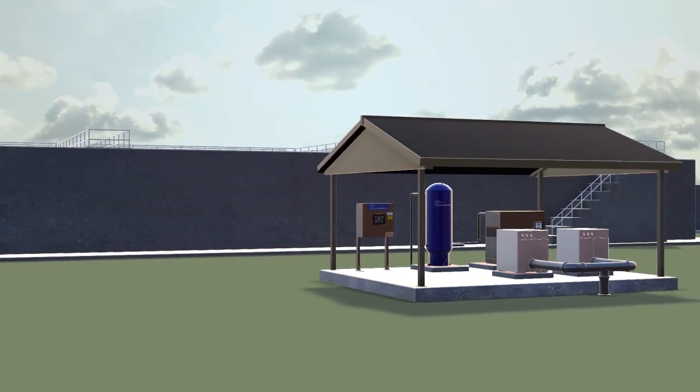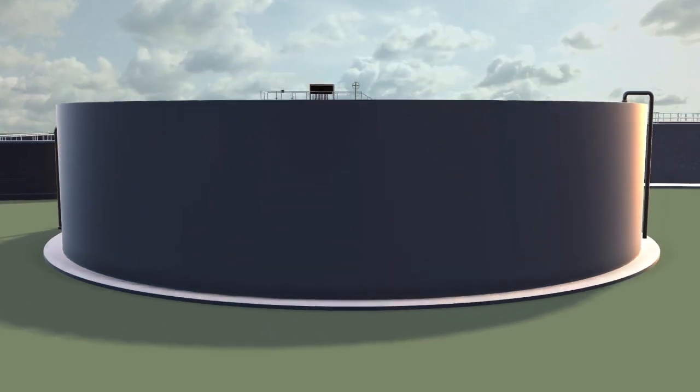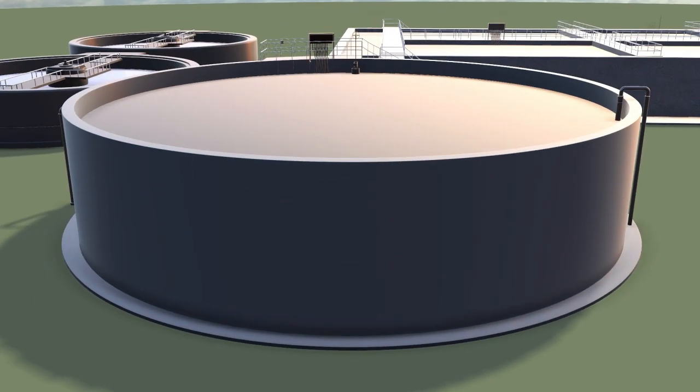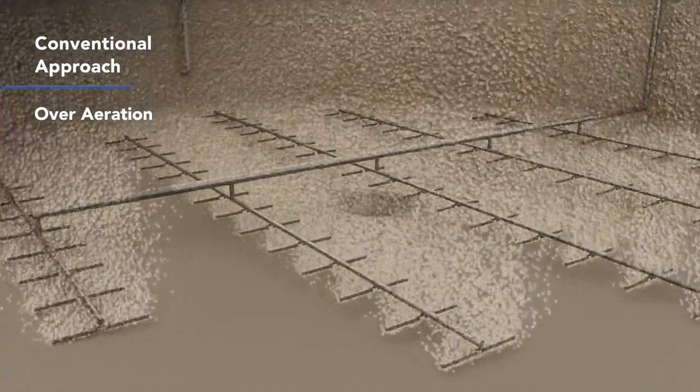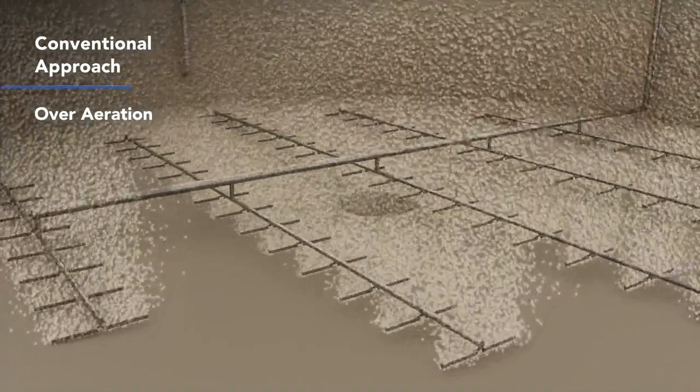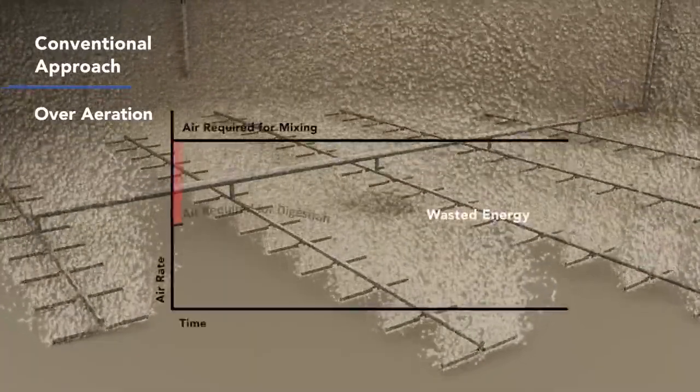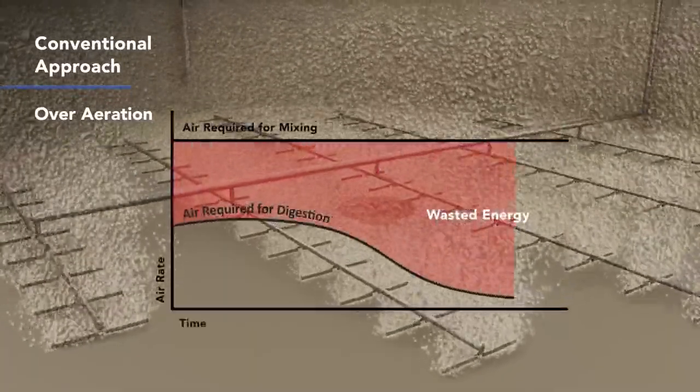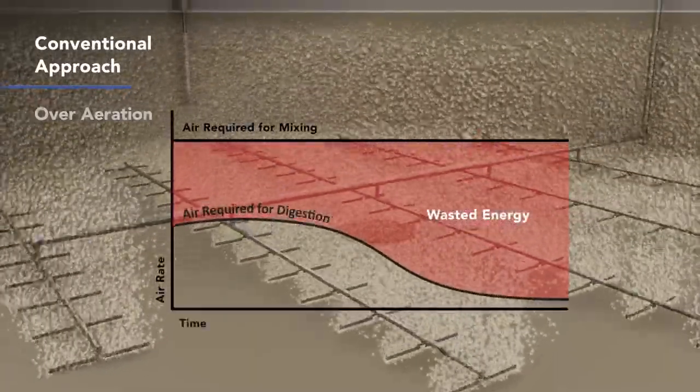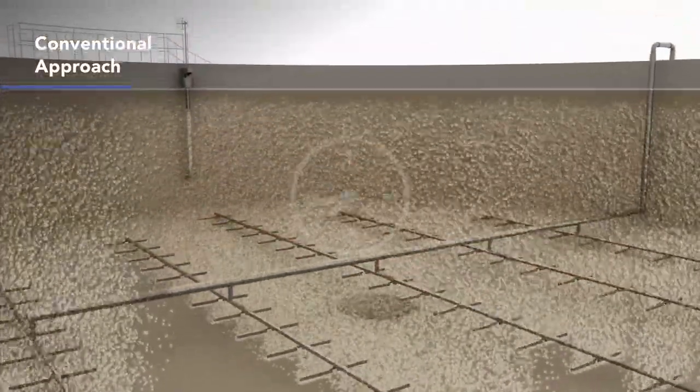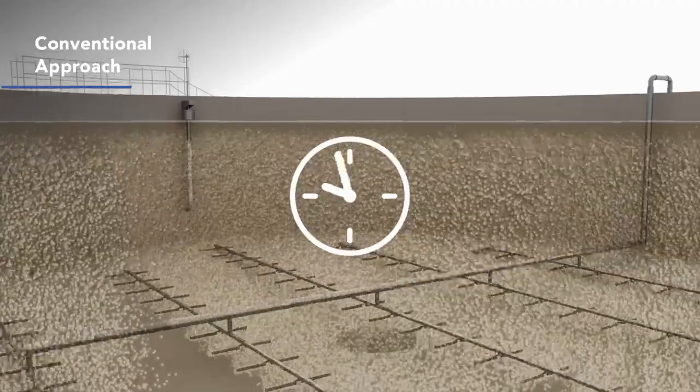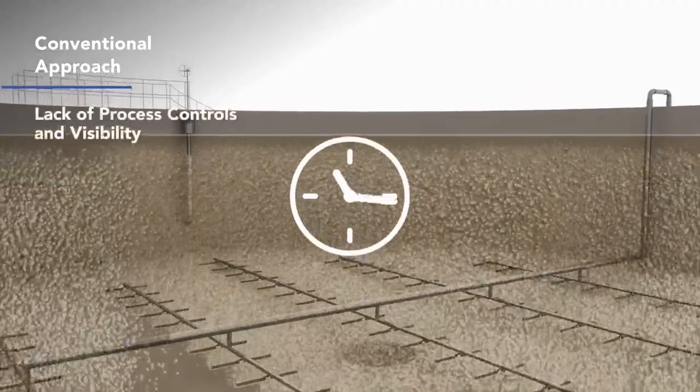With these goals in mind, conventional aerobic digestion creates numerous problems. Let's look at the aeration equipment. The required mixing air rate demands a constant flow of aeration, regardless of biological process needs. In most cases, the mixing airflow is far greater than the oxygen demand. To maintain complete mixing, the conventional aerobic digester aerates 24-7 and offers no flexibility or process control.